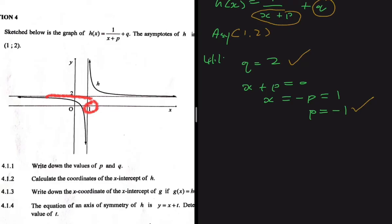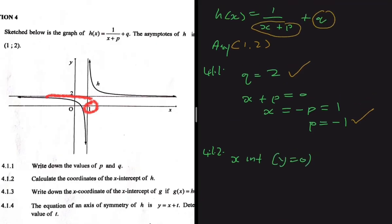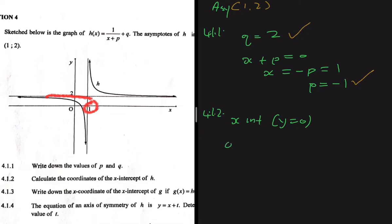This confirms the vertical asymptote at x = 1, because if x = 1 we get 1 divided by 0, which is undefined. Now for 4.1.2, we need to calculate the coordinates of the x-intercept of h. As soon as we need the x-intercept, we let y = 0.